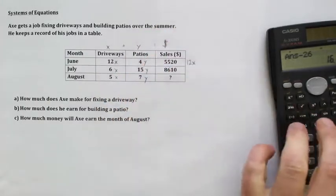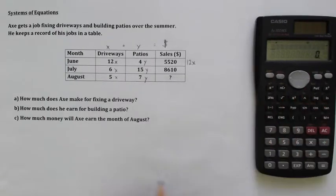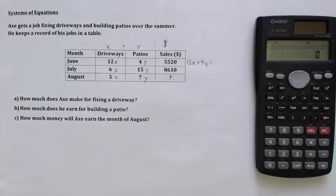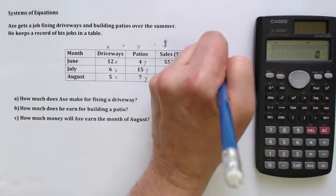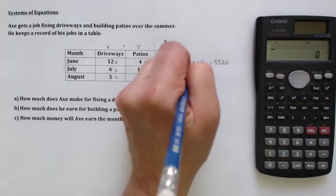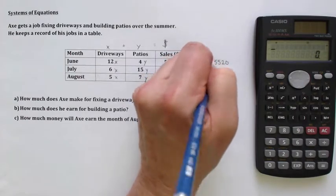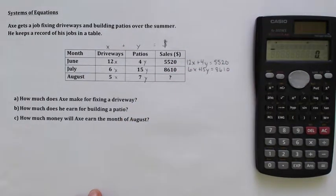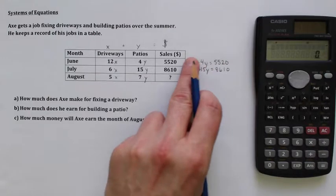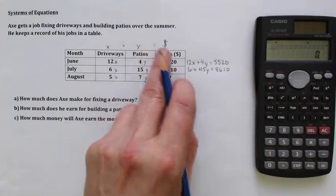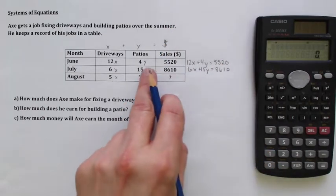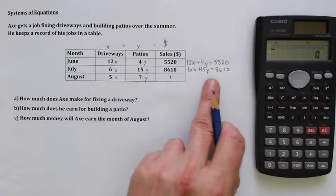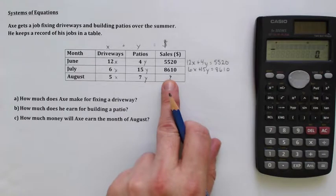Check it out. 12X plus 4Y is equal to 5,520. And down here, we've got 6X plus 15Y, and that's going to equal 8,610. And once we figure out our X's and our Y's from this system, once we know what the X and the Y are, which have to be the same, because we know he charges the same in June as he does in July, it doesn't tell us he charges differently, just does different numbers of them. Once we solve this system, we can plug it back in. But we've got to solve the system.